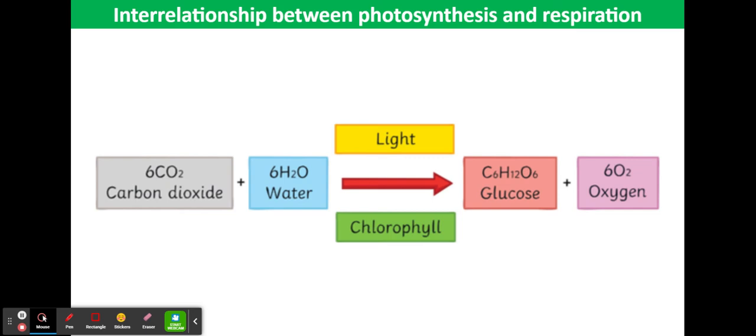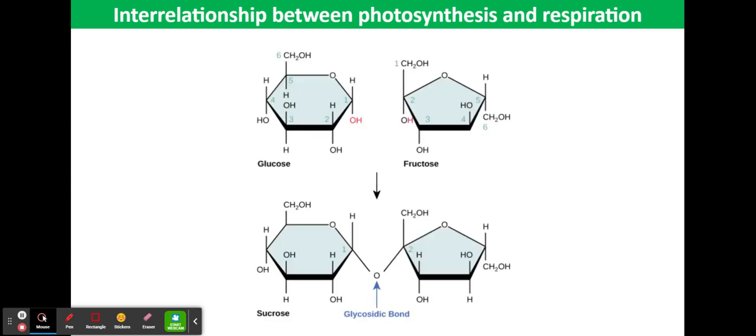The main product of photosynthesis is a monosaccharide sugar which can be converted to disaccharides for transport and then to starch for storage.